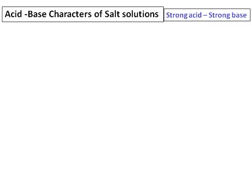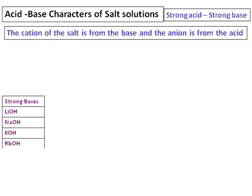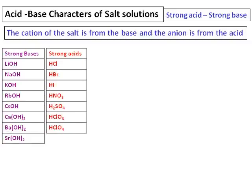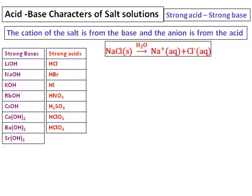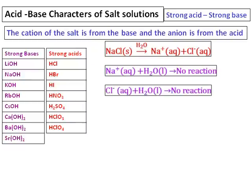Let's learn about different salt solutions. We start with a salt formed from a strong acid and strong base. Recall that the cation of the salt is from the base and the anion is from the acid. We will reference a list of the 8 strong bases and 7 strong acids. Consider the first salt: sodium chloride, formed from the strong base sodium hydroxide and the strong acid hydrochloric acid. When dissolved in water, I get sodium ions and chloride ions. Sodium ion is from a strong base and Cl⁻ is the conjugate base of a strong acid.